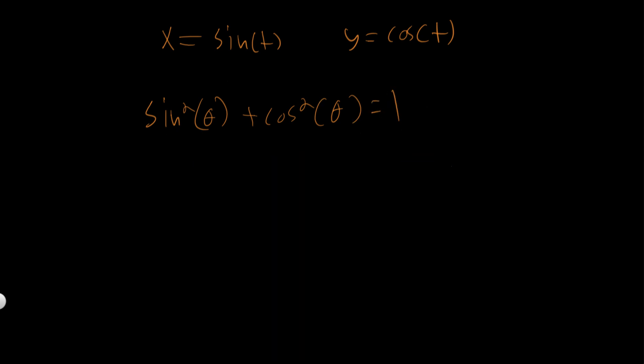Now what we can do is we can manipulate this and substitute t. So we can say that sine squared of t, because theta could be t, theta could be anything, so sine squared of t plus cosine squared of t is also equal to 1.